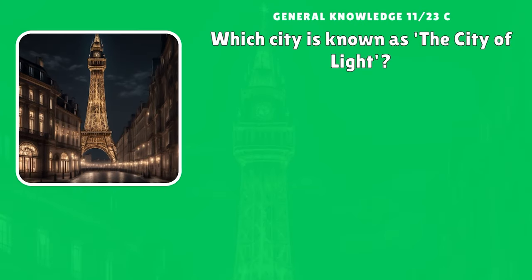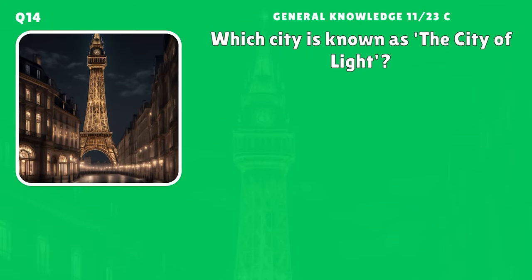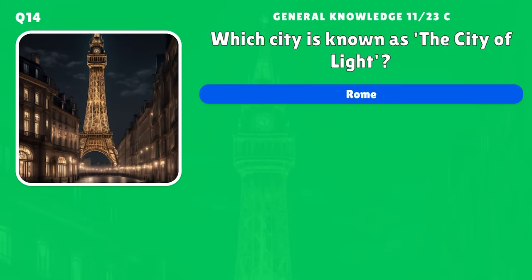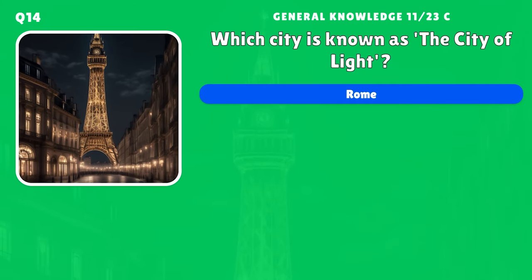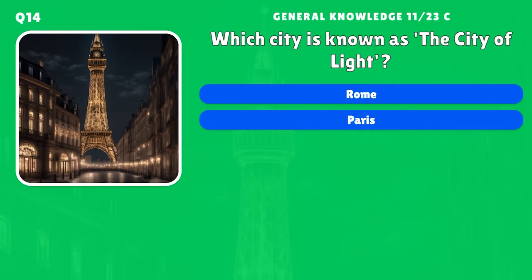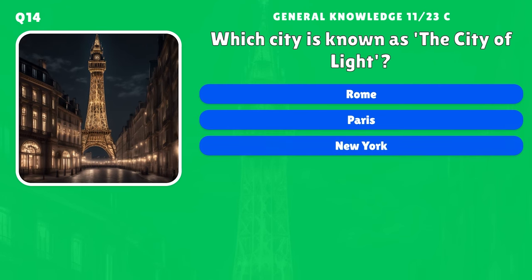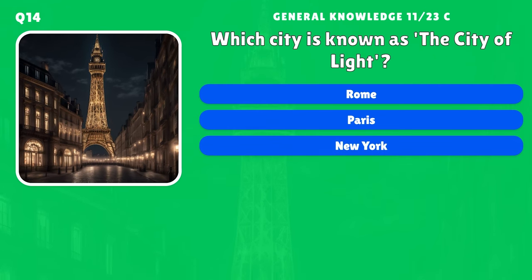Which city is known as the City of Light? A) Rome, B) Paris, C) New York, D) Berlin.